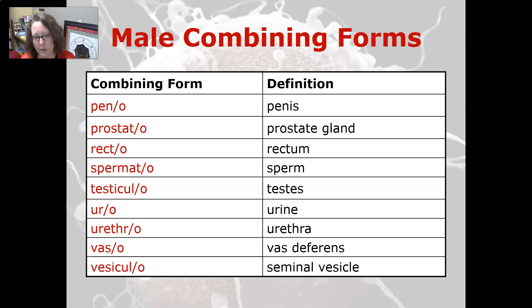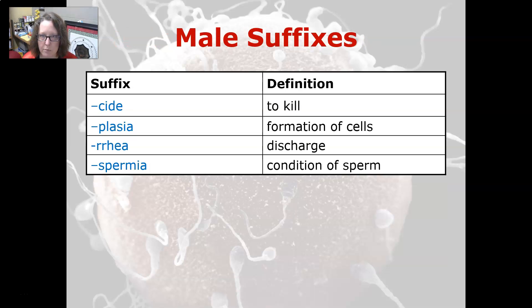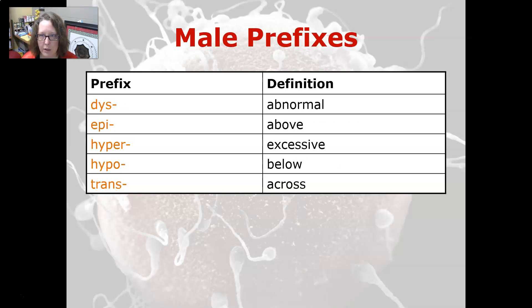And vesiculo means the seminal vesicle. The male suffixes are: cide means to kill, as in spermicide; plasia is a formation of cells; rhea is discharge; and spermia is a condition of sperm.